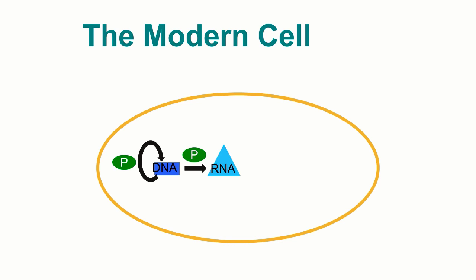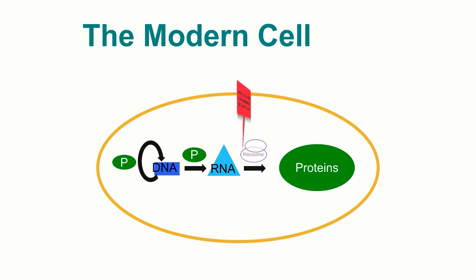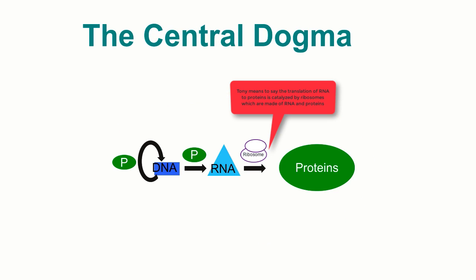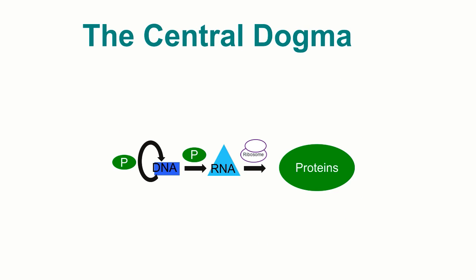And finally, RNA is translated into proteins. Yet again, this process is catalyzed through protein enzymes. What we've just described here is called the central dogma, and this process of going from DNA to RNA to proteins is exhibited in all forms of modern life.